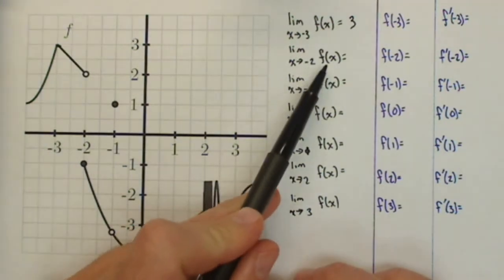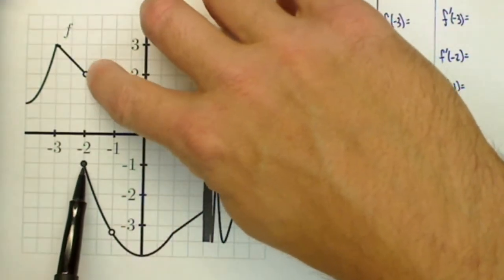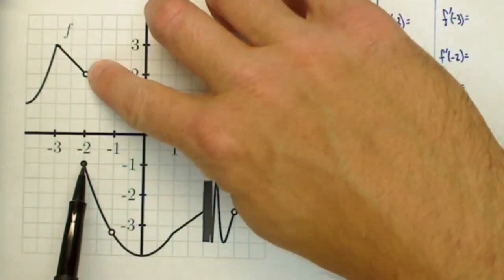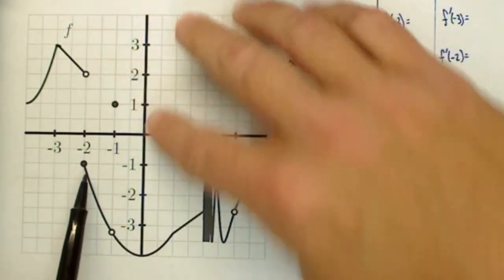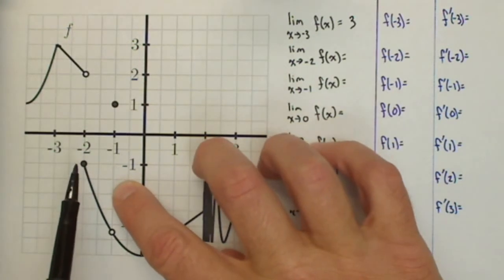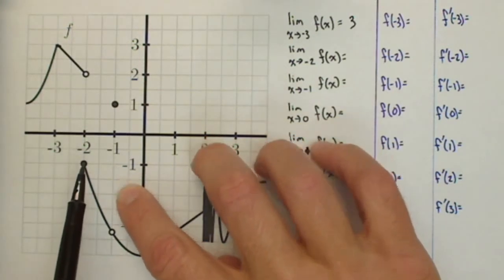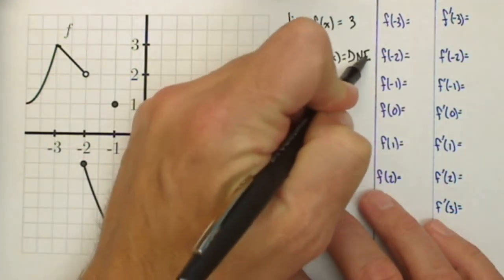The limit as x approaches negative 2 of f of x, well, if we try to capture the y value, notice what happens is we get really close to negative 2. We get both a positive 2 and a negative 1. Can't be both, it has to be close to one value. So we would say that in this case the limit does not exist, DNE.